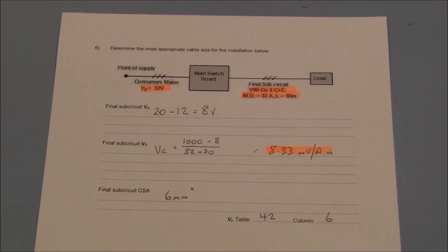Using a 6 millimetre squared cable on a 32 amp circuit may sound excessive from a current carrying capacity. But delivering 32 amps a distance of 30 metres is a substantial undertaking. And this is why voltage drop considerations are necessary.